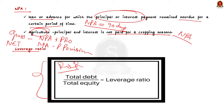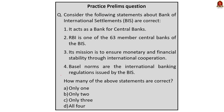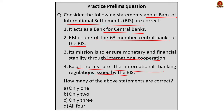Practice question on Bank for International Settlements: Statement 1 — it acts as a bank for central banks. Statement 2 — RBI is one of the 63 member central banks of BIS. Statement 3 — its mission is to ensure monetary and fiscal stability through international cooperation. Statement 4 — Basel norms are international banking regulations issued by the BIS. Correct answer is option C — only three statements are correct. The last statement is incorrect because it is the Basel Committee on Banking Supervision, not BIS directly, that issues Basel norms.